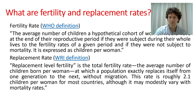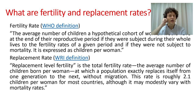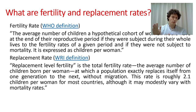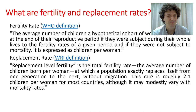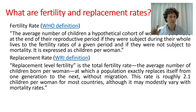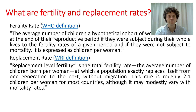The replacement rate is a little different. Replacement level fertility is the total fertility rate — the average number of children born per woman — at which a population exactly replaces itself from one generation to the next, without migration. This rate is roughly 2.1 children per woman for most countries, though it may vary modestly with mortality rates. If most women have two or three children, population stays roughly the same, maybe with slight growth.